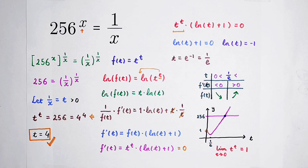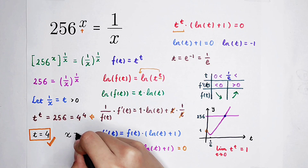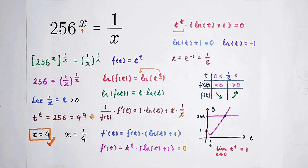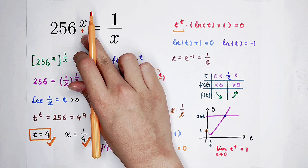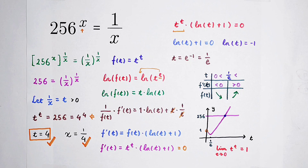When t equals 4, then x is 1 over 4. Substitute it into the original equation and check — you can find that this solution is correct. Did you get it? Don't forget to give me a thumbs up and subscribe to my channel for more videos. Until next time, bye-bye.